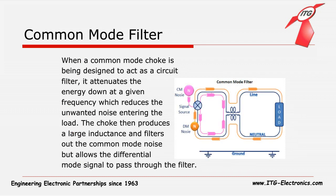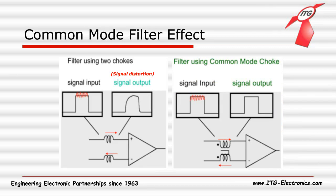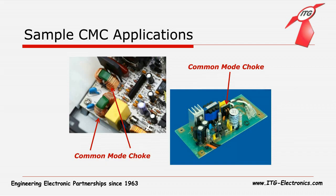Here is how a Common Mode Choke filter works. When a Common Mode Choke is designed to act as a circuit filter, it attenuates energy down to a given frequency, which reduces the unwanted noise entering the load. The coils then produce a large inductance. This filters out the common mode noise only, allowing the differential mode signals to pass through the filter. We can see why we want to use a Common Mode Choke filter: using two single coils as a filter does filter out the noise, but also distorts the signal. When switched to a Common Mode Choke filter, we get clean signals after the noise is filtered out. Some pictures show the applications of Common Mode Chokes used as filters.